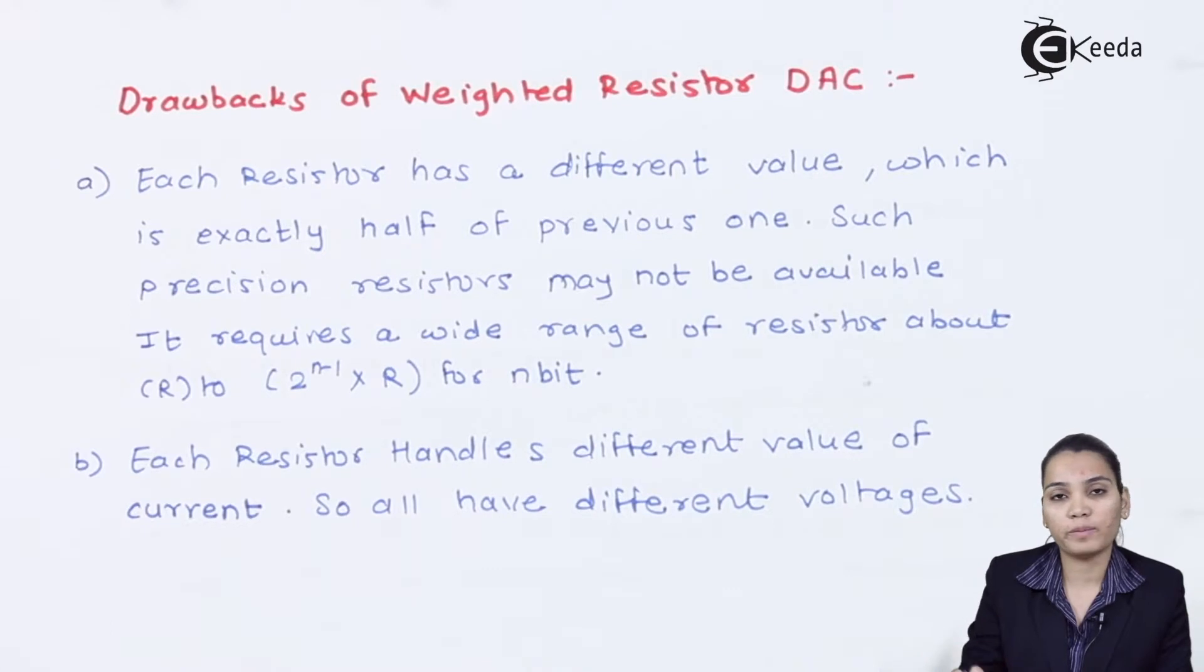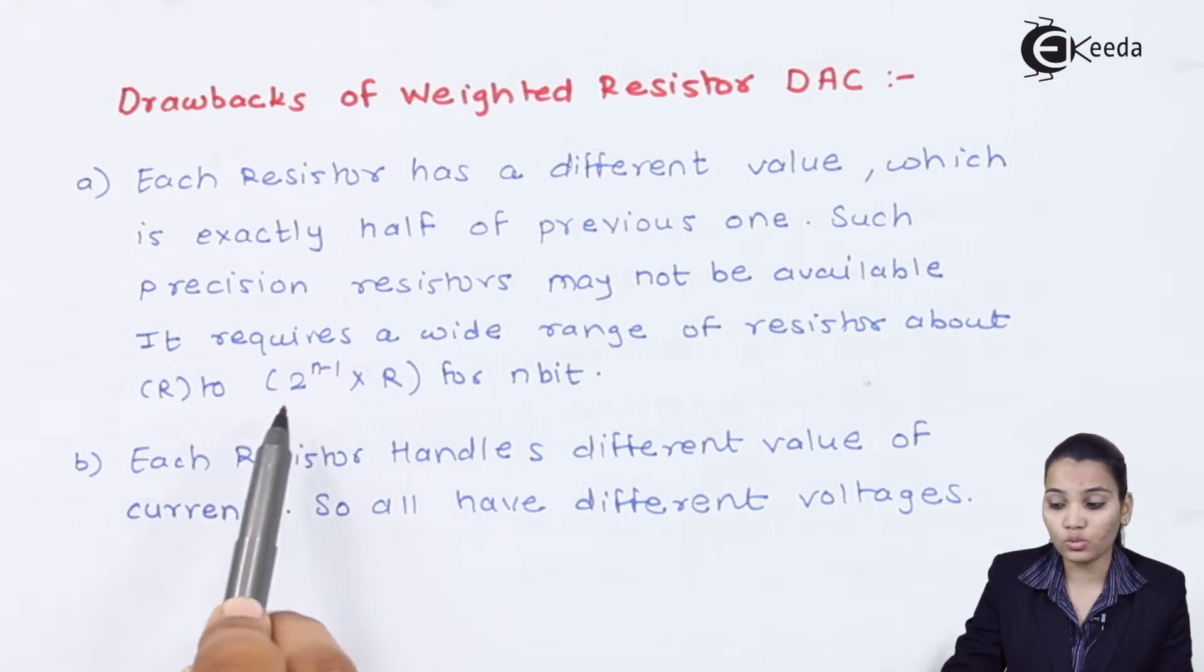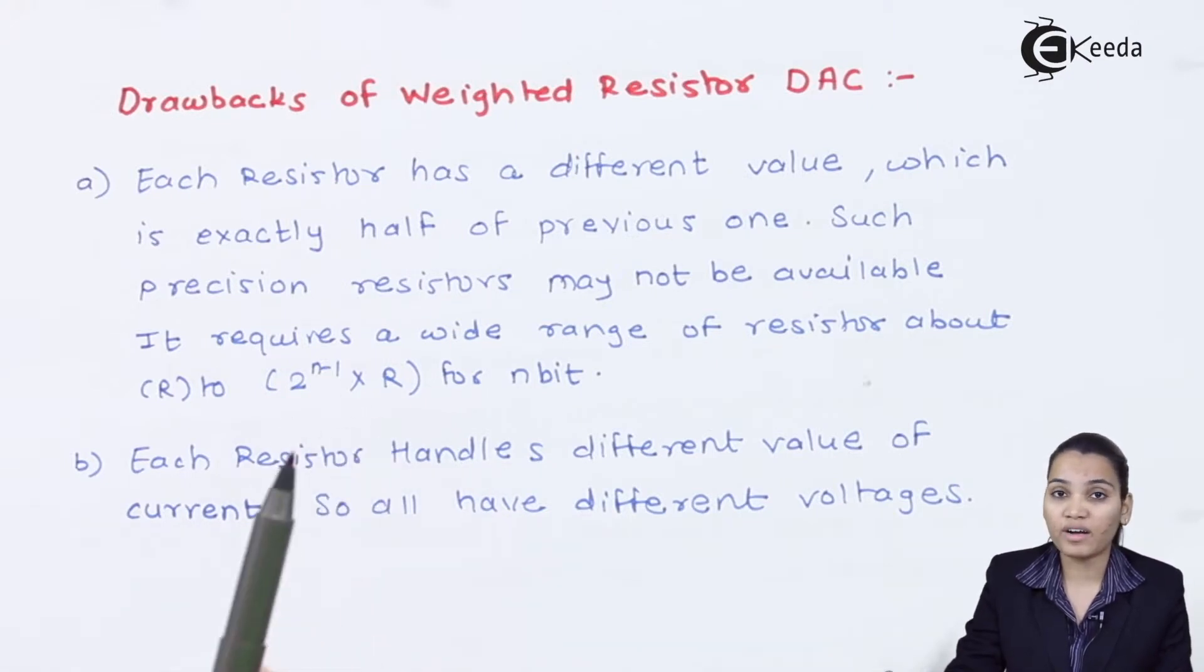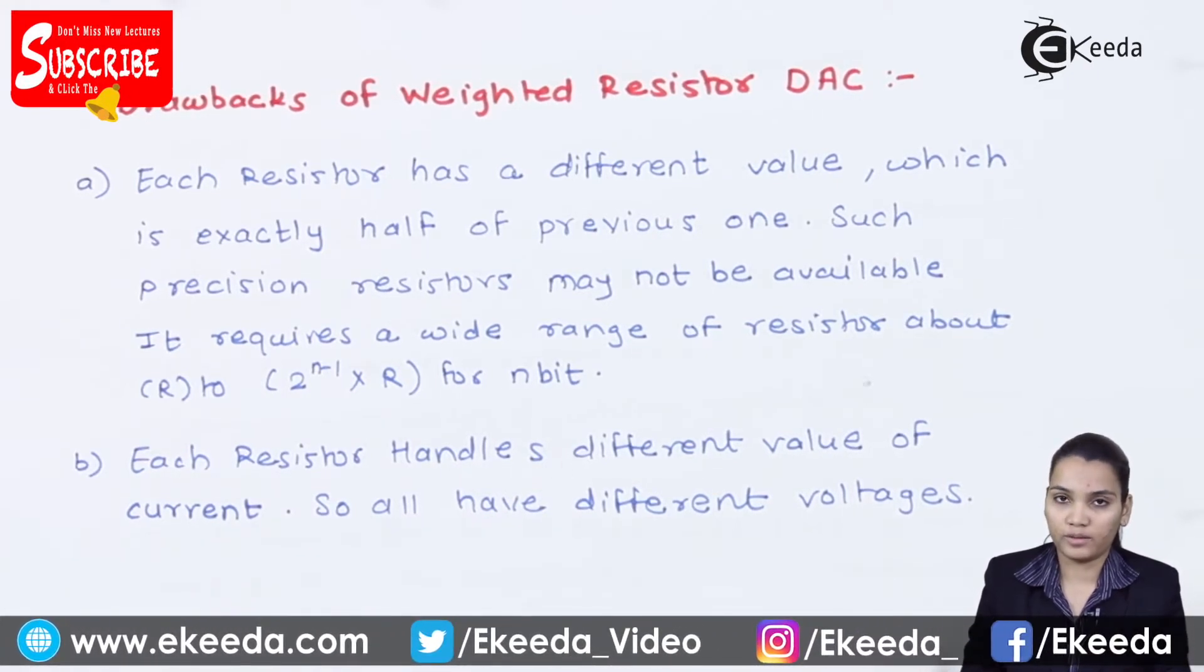Now suppose there is a 5-bit D2A converter. In the 5-bit D2A converter, we will require 2 raise to 5-1, that is 2 raise to 4. 2 raise to 4 is nothing but 16. So we will require 16Rs, we will require 5 stages of resistance. As there are many resistors, each resistor handles a different value of current because the voltage is very different at each level.